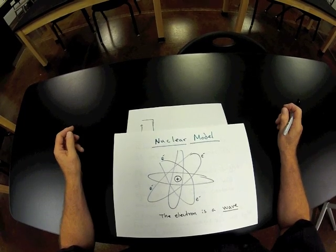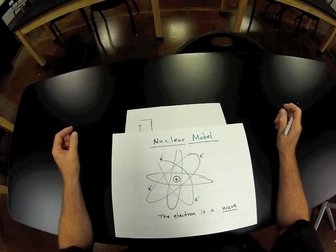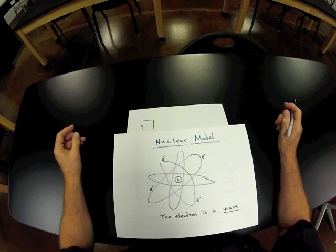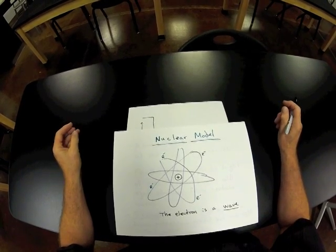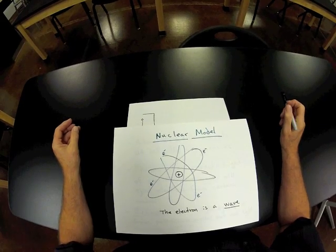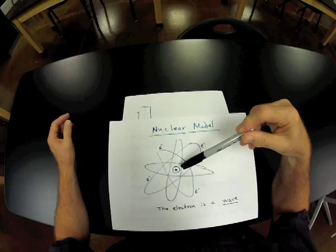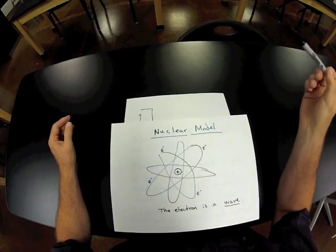Basically what scientists had settled on at the time was called the nuclear atom. The nuclear atom, or the evidence that came out supporting the nuclear model, came from Rutherford's lab and the famous gold foil experiment. Basically, the nuclear model stated that the atom was composed of a hard, dense core at its center with a positive charge.